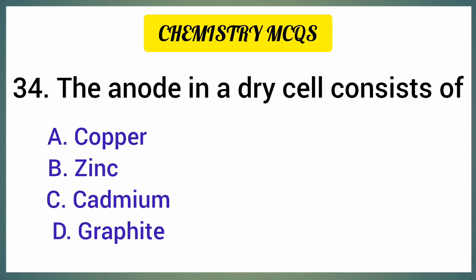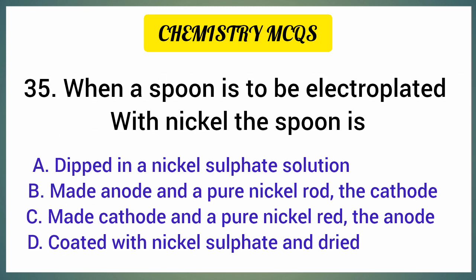The anode in a dry cell consists of — correct option is option B: Zinc.